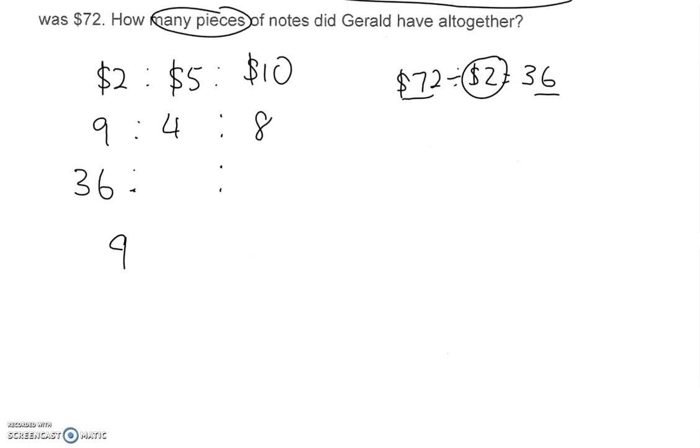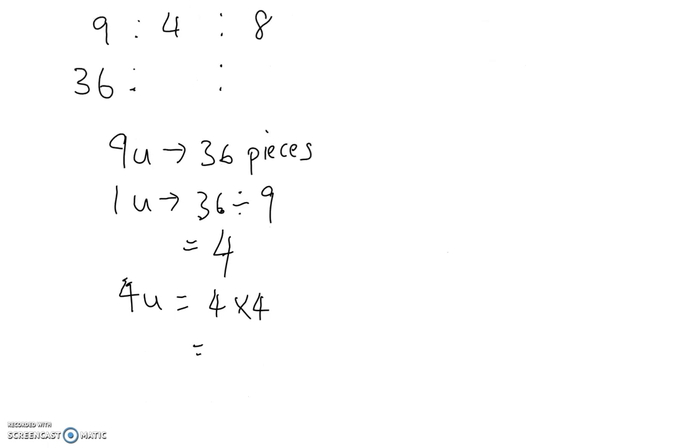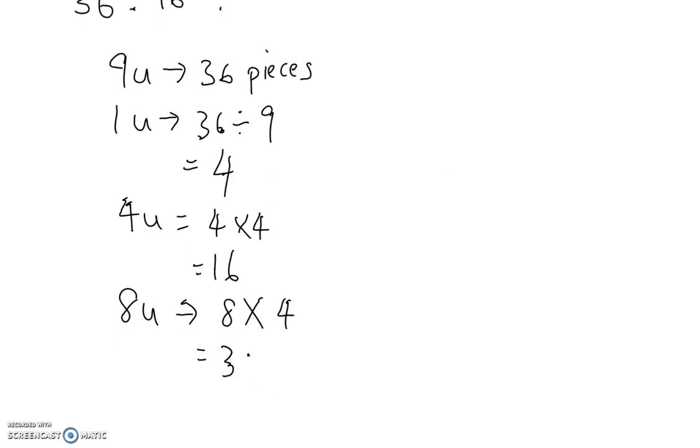So 9 units is actually 36 pieces of $2 notes. We are interested in 1 unit, which is 36 divided by 9, which is 4. So $5 notes, they are all together 4 units. So what do we need to do? 4 times 4 gives you a total of 16 pieces. Okay, 8 units will be 8 times 4, which is equal to 32 pieces.